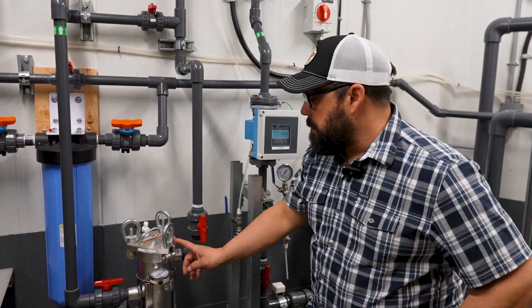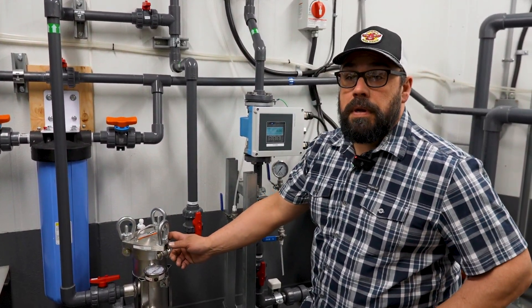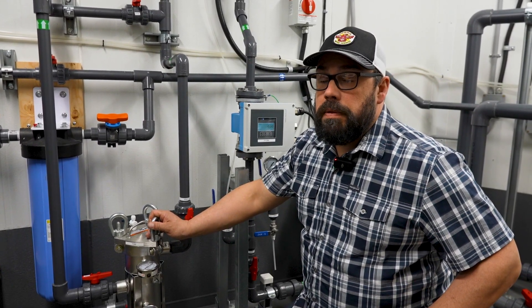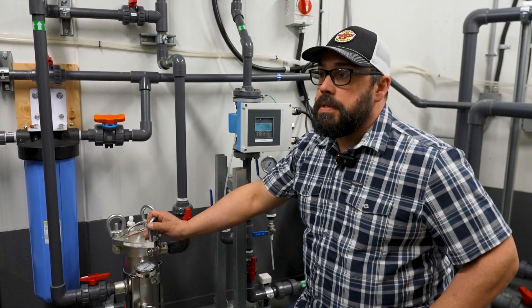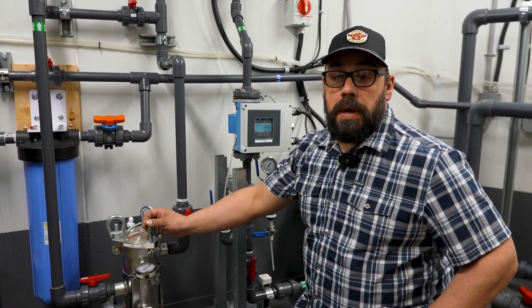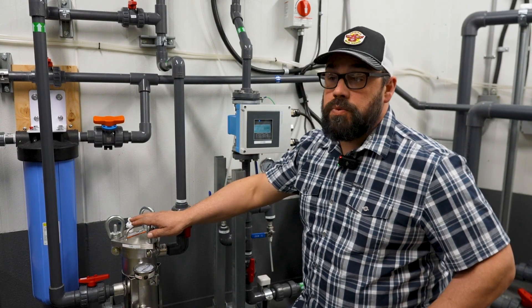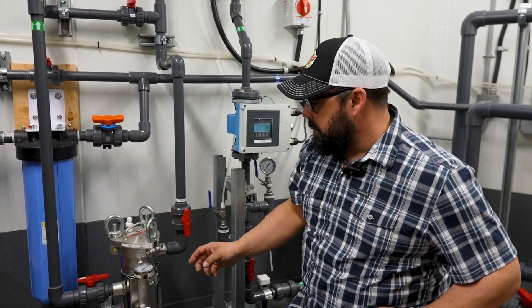This here is our bag filter. It is a 25 micron bag filter. A micron described is actually, if you want to put it in terms, one thickness of one hair is 100 microns. So the pore hole size in this is 1/25th thickness of a hair.